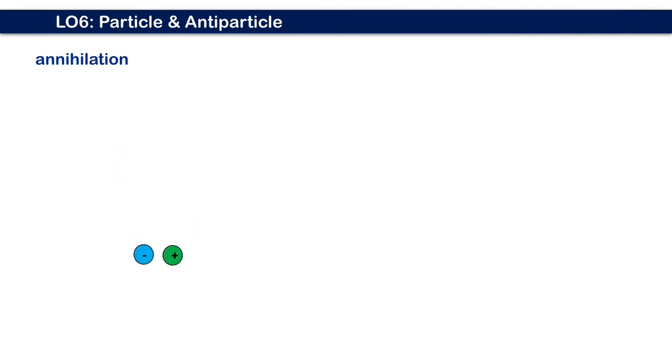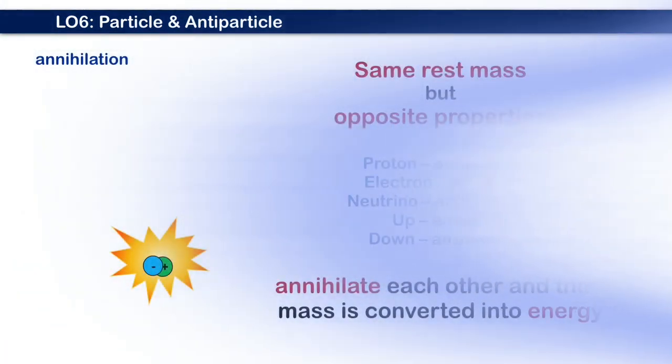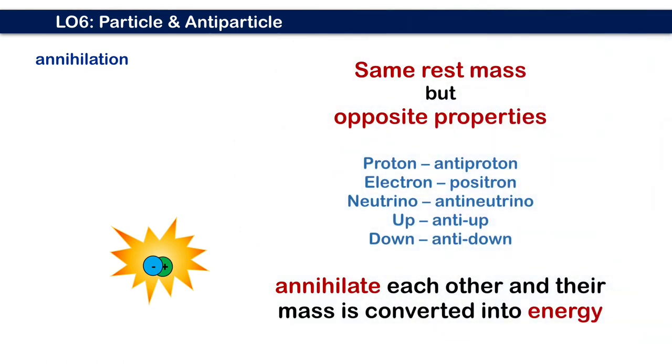Most types of particles have a corresponding anti-particle. This has the same rest mass but at least one property which is opposite to that of the particle. For example, proton has its anti-proton, electron has its anti-electron called positron, neutrino has its anti-neutrino, and even quarks have their own anti-quarks, which is up for anti-up and down for anti-down. When a particle and its anti-particle meet, in most cases they annihilate each other and their mass is converted into energy.